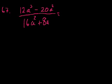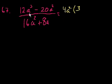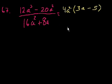In the numerator, both terms are divisible by 4 and a squared, so let's factor out 4a squared. We get 4a squared times: 12a cubed divided by 4a squared is 3a, minus 20a squared divided by 4a squared is 5. So the numerator is 4a squared times 3a minus 5. If you don't believe this: 4a squared times 3a is 12a cubed, and 4a squared times minus 5 is minus 20a squared. So it works out.